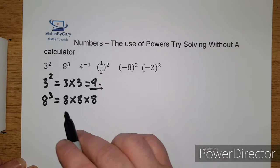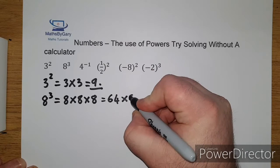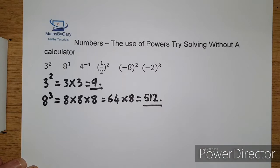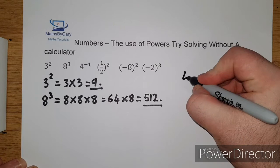So without a calculator we know first that 8 times 8 will give us 64. But then we have to multiply it by the third 8 which gives us 512. So that's how you work out 3 squared and 8 cubed.